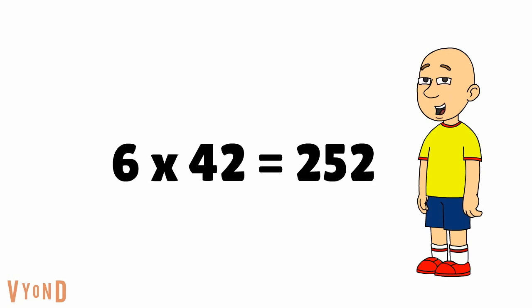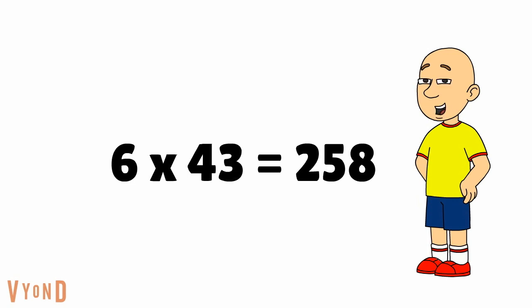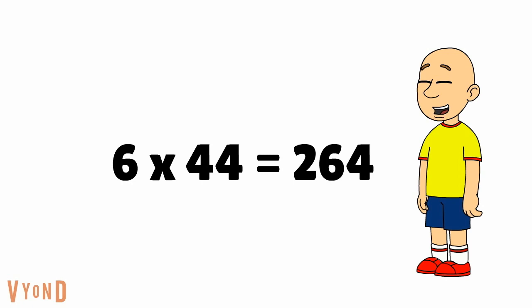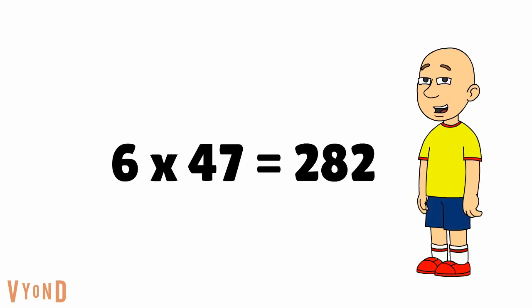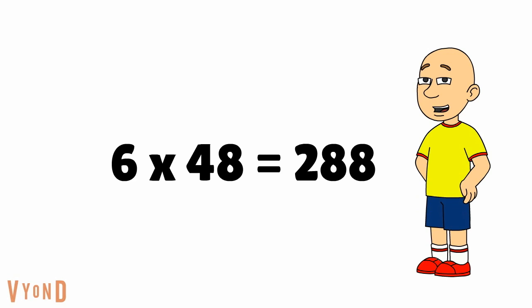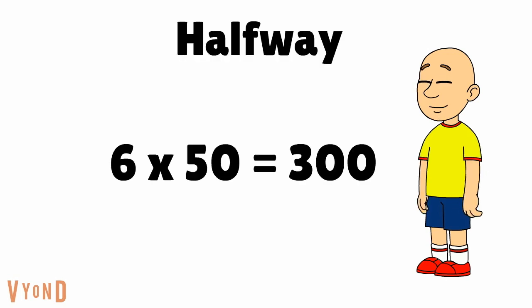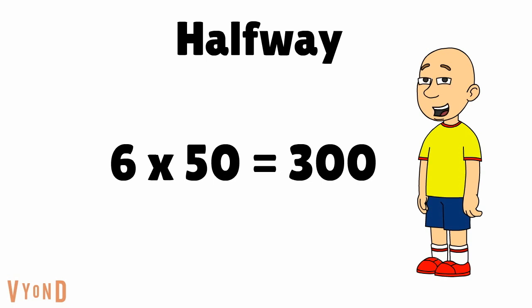6 times 42 equals 252. 6 times 43 equals 258. 6 times 44 equals 264. 6 times 45 equals 270. 6 times 46 equals 276. 6 times 47 equals 282. 6 times 48 equals 288. 6 times 49 equals 294. And 6 times 50 equals 300.